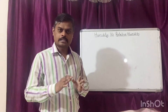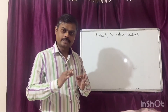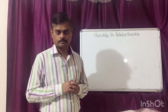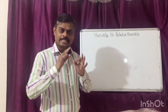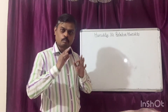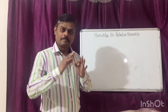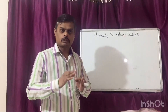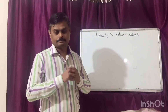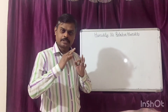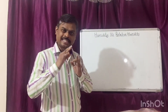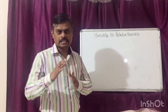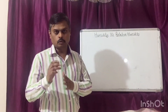Let's first understand what is humidity. Humidity is the amount of moisture present in the air in the form of water vapors. It is measured in gram per liter, i.e., mass per volume.